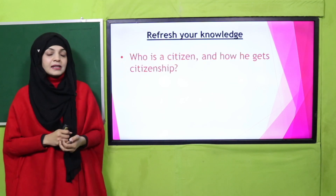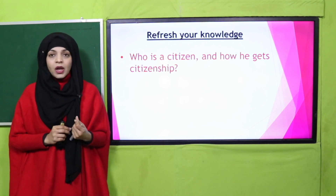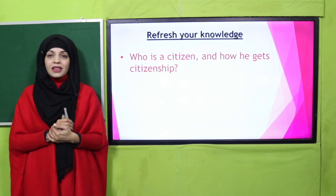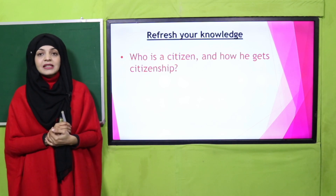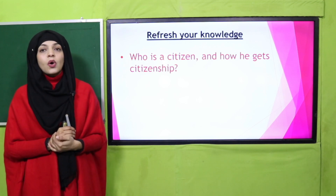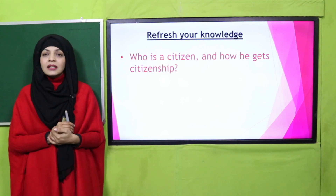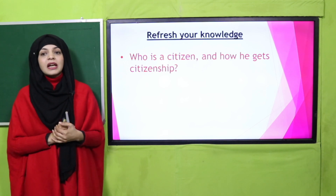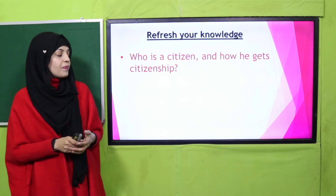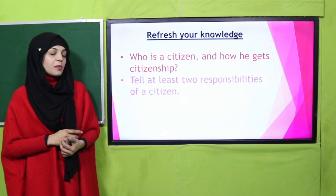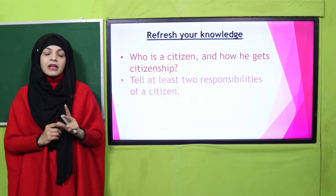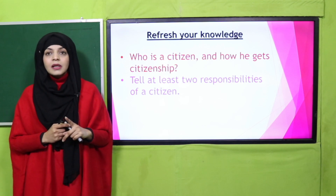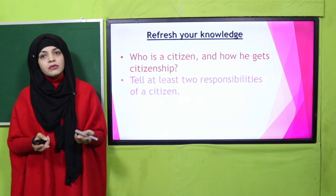Let's quickly refresh your knowledge from the previous lecture. Who is a citizen and how do we get citizenship? A citizen is a person living in a country who has all the rights and responsibilities. He gets citizenship when he is born and educated in that country. Now tell me at least two responsibilities of a citizen. Yes — maintaining peace, maintaining cleanliness, following the rules, accepting others, tolerating others — these are all the responsibilities of a good citizen.